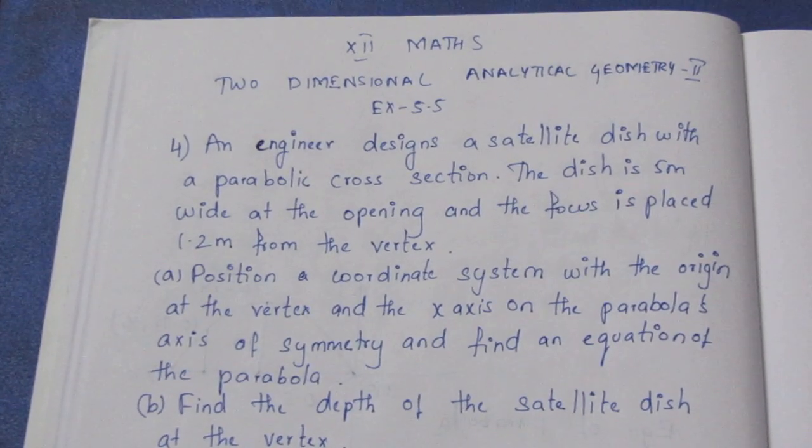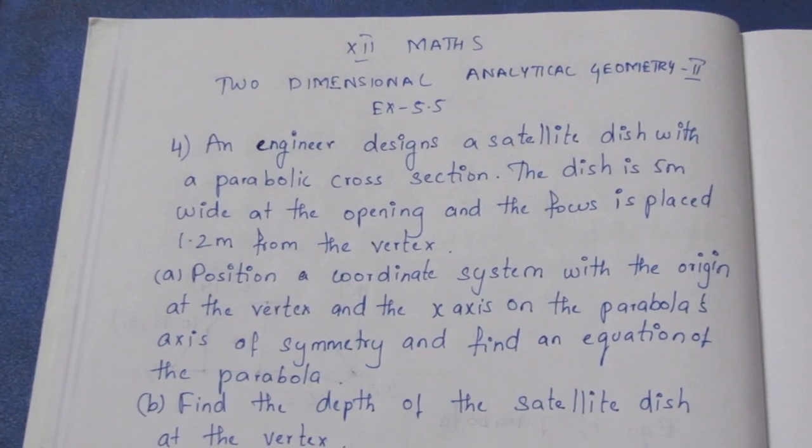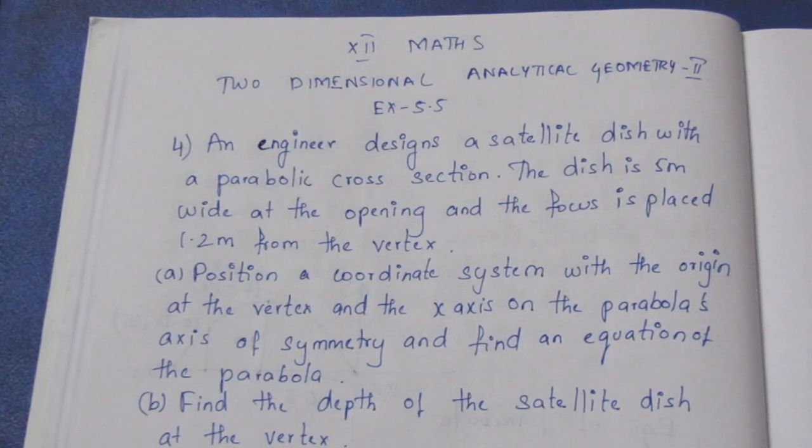Let's look at the question. An engineer designs a satellite dish with a parabolic cross section. The dish is 5 meter wide at the opening and the focus is placed at 1.2 meter from the vertex.